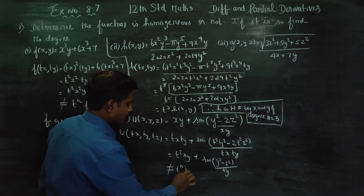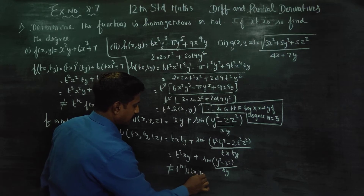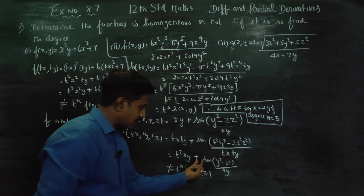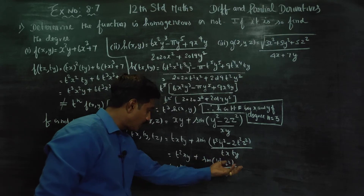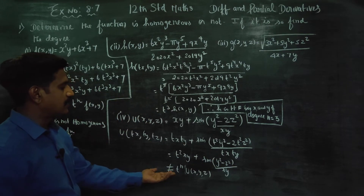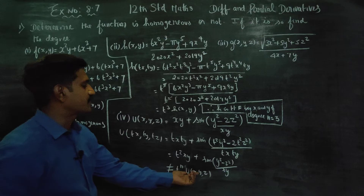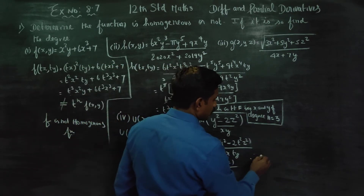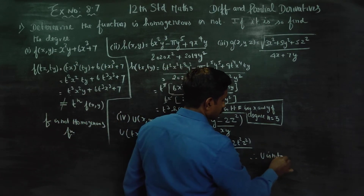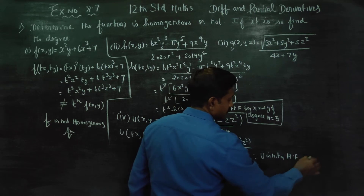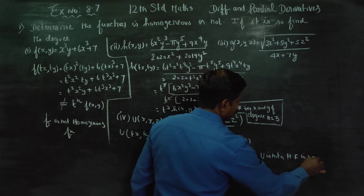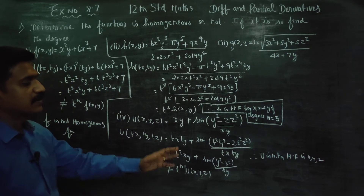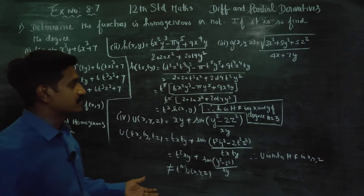t power common is not equal to t power n of u. Therefore u is not equal to t power n of x, y, z. Therefore, u is not a homogeneous function in x, y, and z. It is not a homogeneous function.